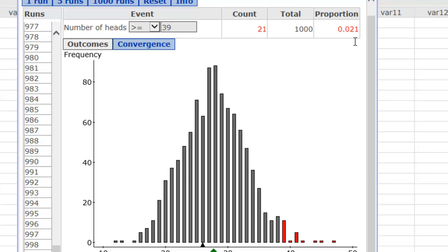I get 2.1%. I'm going to change it to 38. I get 3.4%. I'm going to change it to 37. I get 4.5%. I'm going to change it to 36, and I'm over 5%. So that last value that worked, 37, is our critical value. 37 or more would be an unusual event.